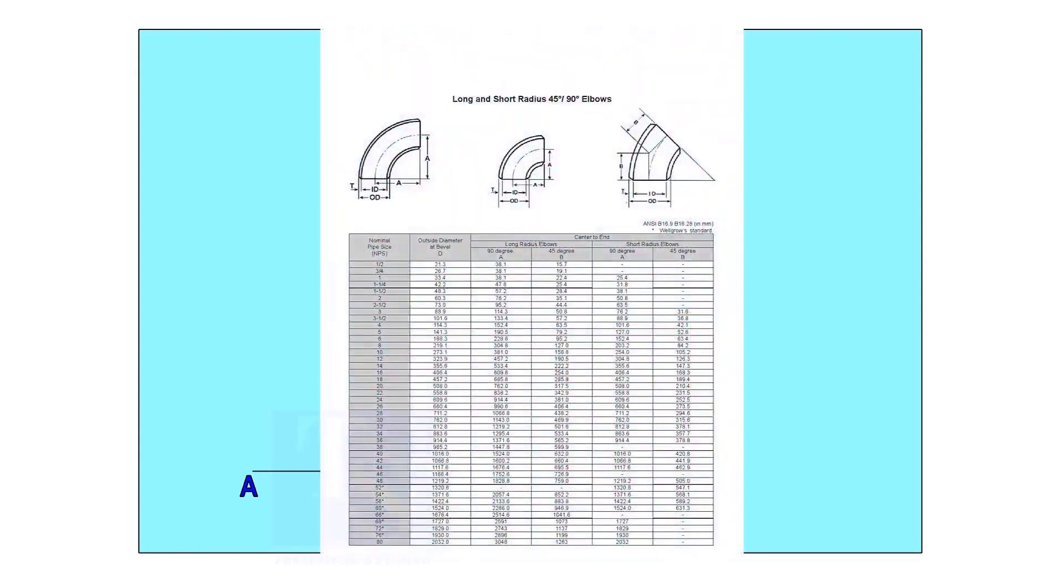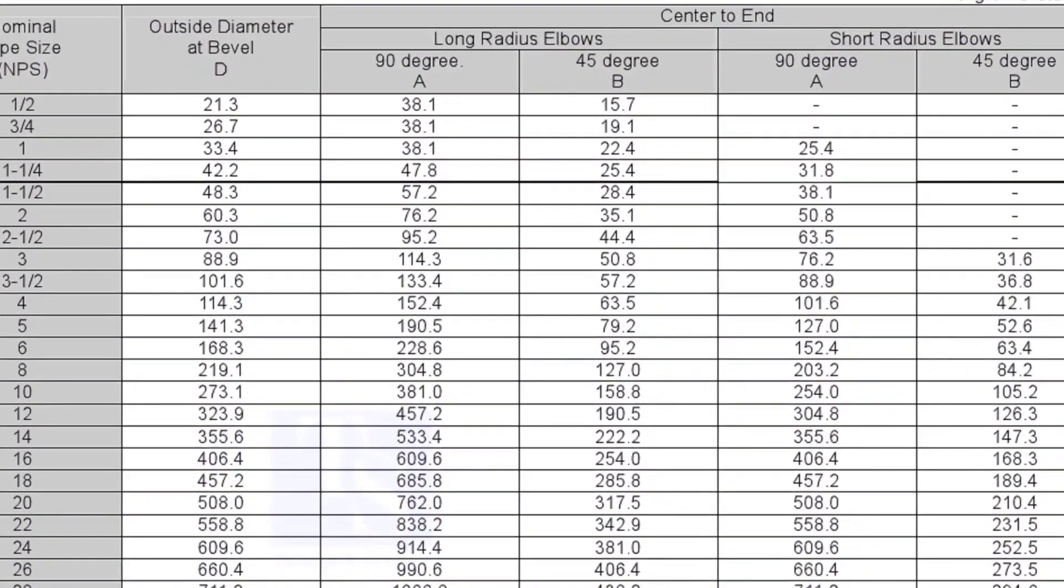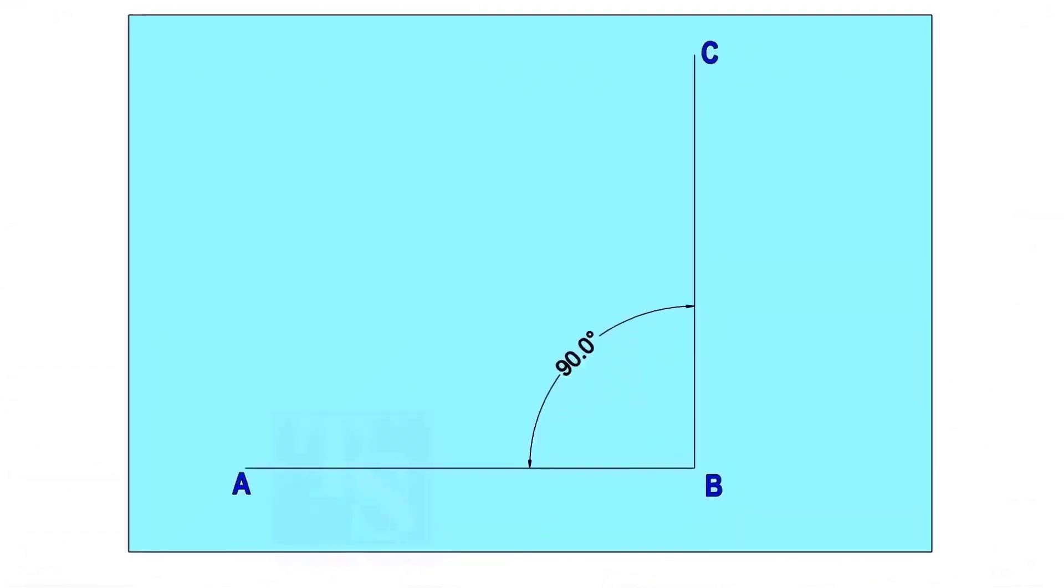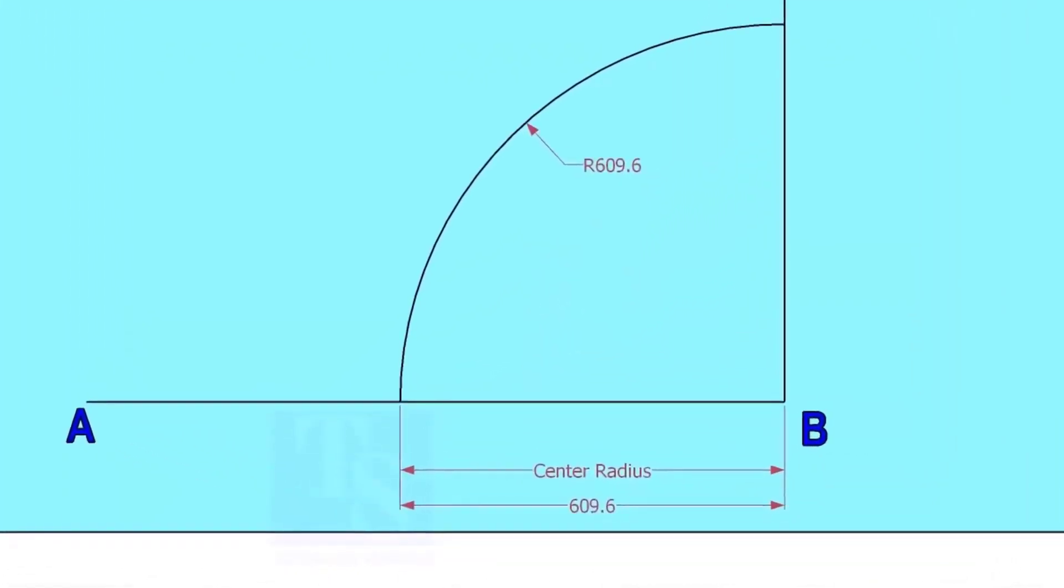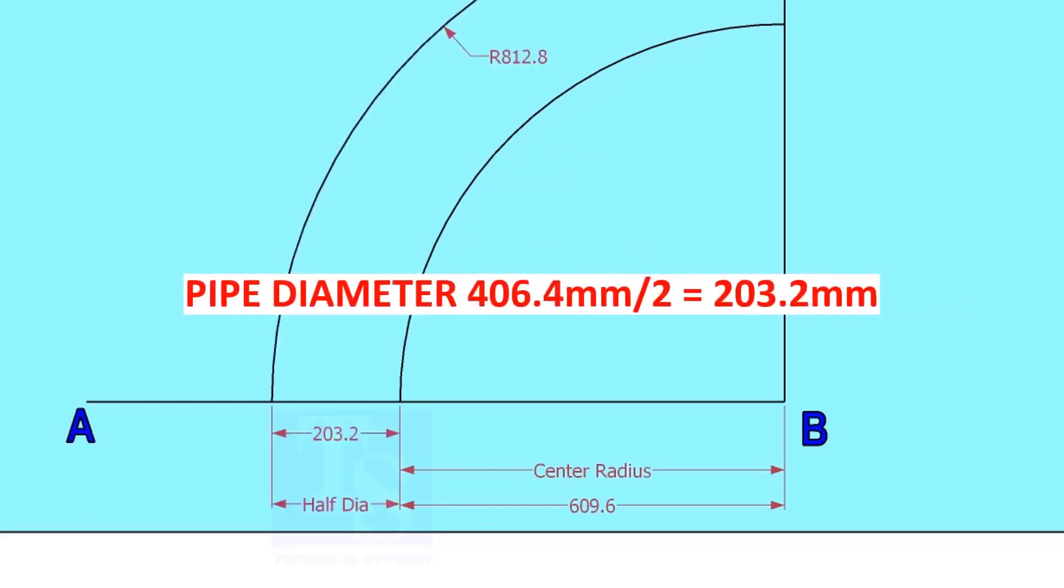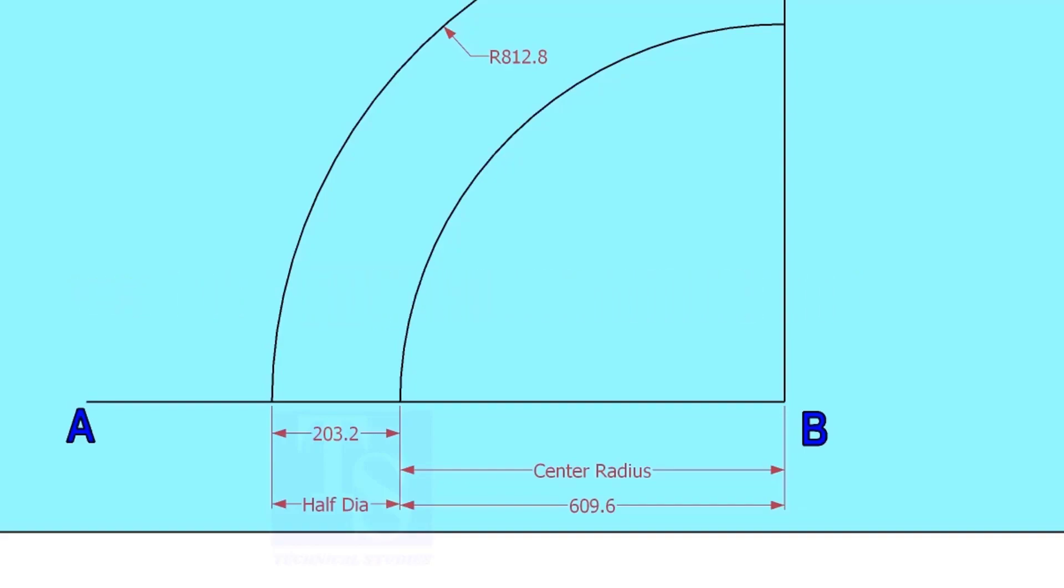Let us check the center radius of 16-inch long radius elbow. Draw an arc with the center radius 609.6 millimeters. Mark the half OD arcs on both sides of the center line.